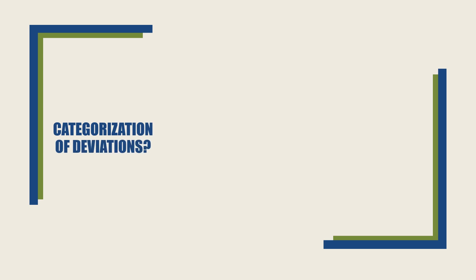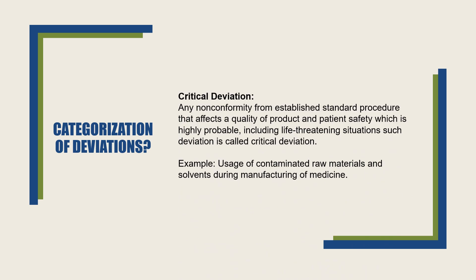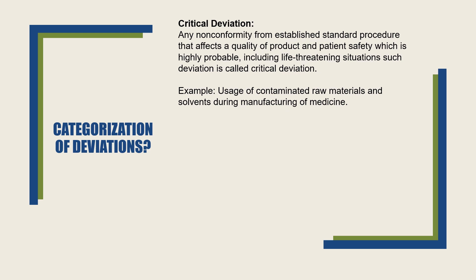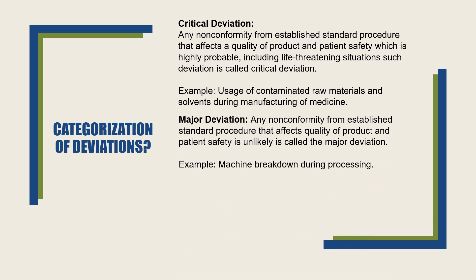Now we will discuss the categorization of deviations. There are three categories: critical, major and minor. A critical deviation is any non-conformity from an established standard procedure that affects the quality of the product and patient safety, which is highly probable, including life-threatening situations. Critical deviations directly impact patient safety, including life-threatening situations. An example is the use of contaminated raw materials and solvents during manufacturing of medicines.